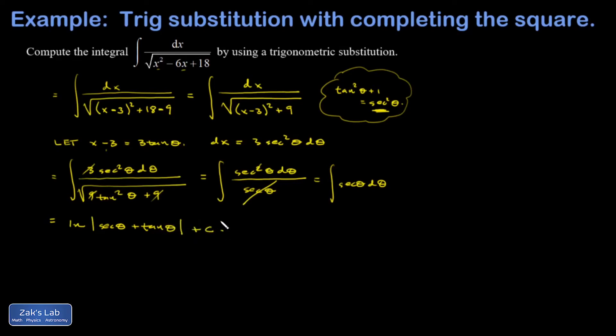It would be nice if we were done at this point, but we have to sub back in terms of x. We can't leave it in terms of θ. If I go back to my original substitution, I can solve that for θ. When I solve for θ, I get that θ is the angle whose tangent is (x - 3)/3. I just divided by 3 and then inverted the tangent function. What that means is we need to find in our final answer the secant of the angle whose tangent is (x - 3)/3.